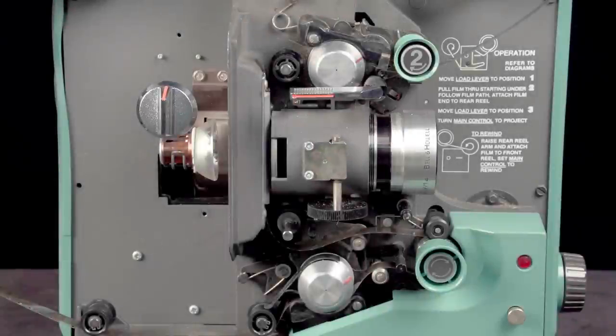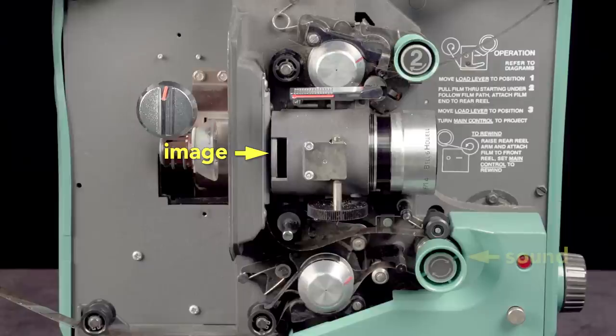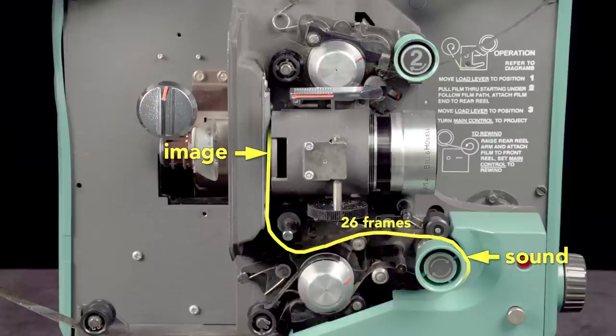Because the image is projected here, and the sound is read down here, the soundtrack is offset 26 frames ahead of the picture in 16mm films. This offset ensures that the picture and sound are correctly synced.